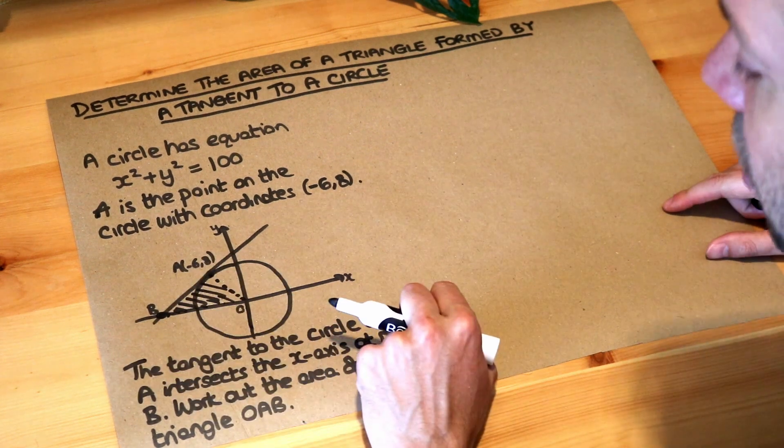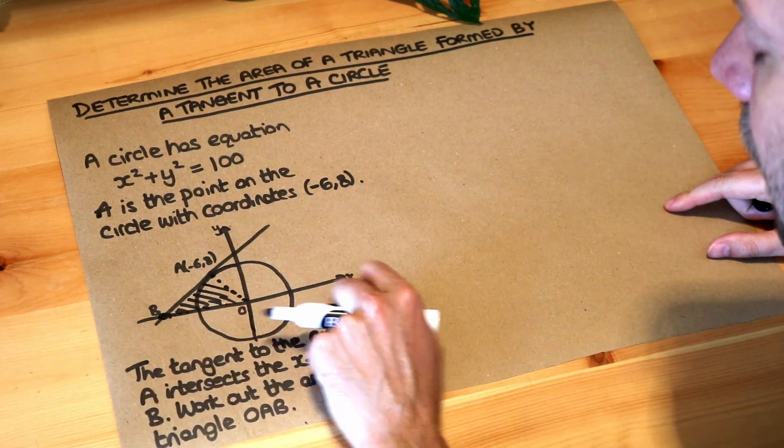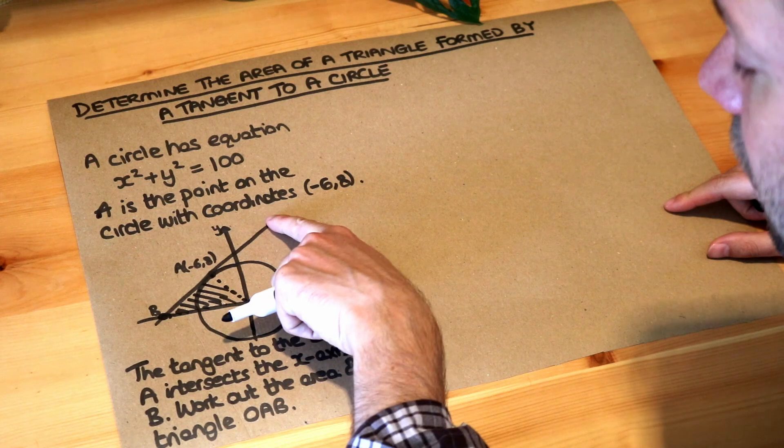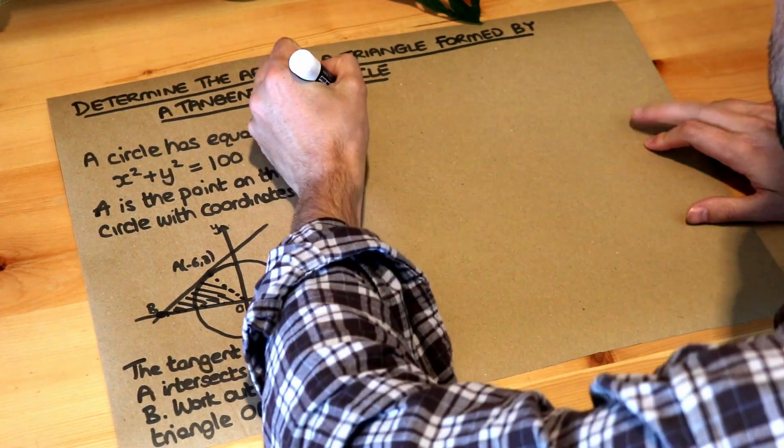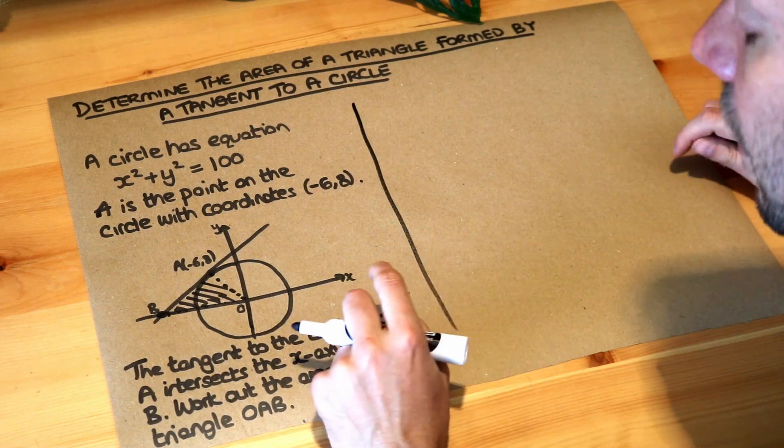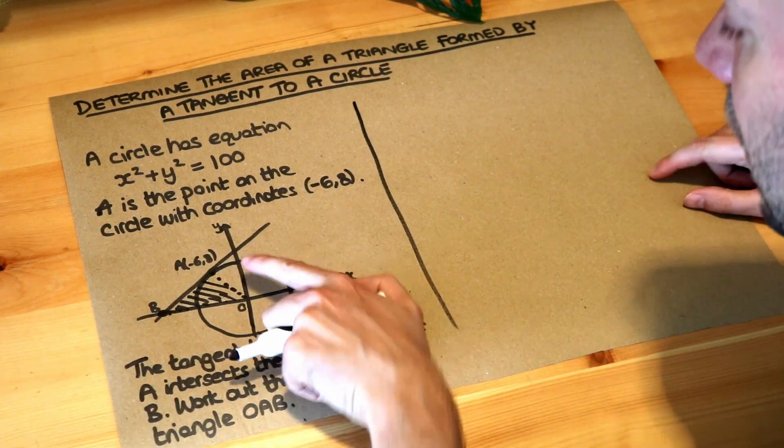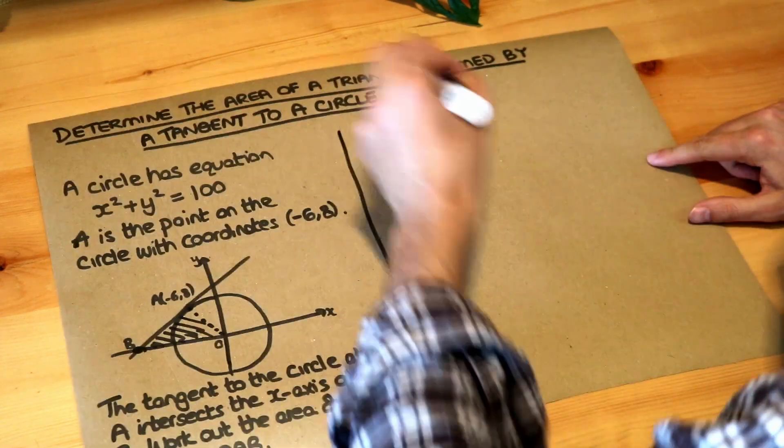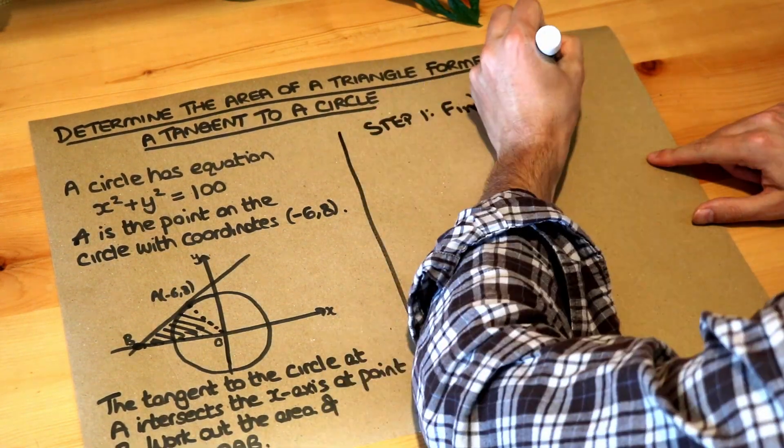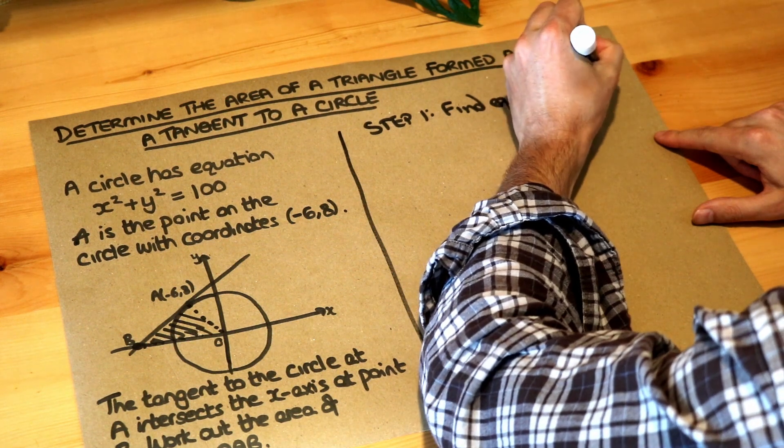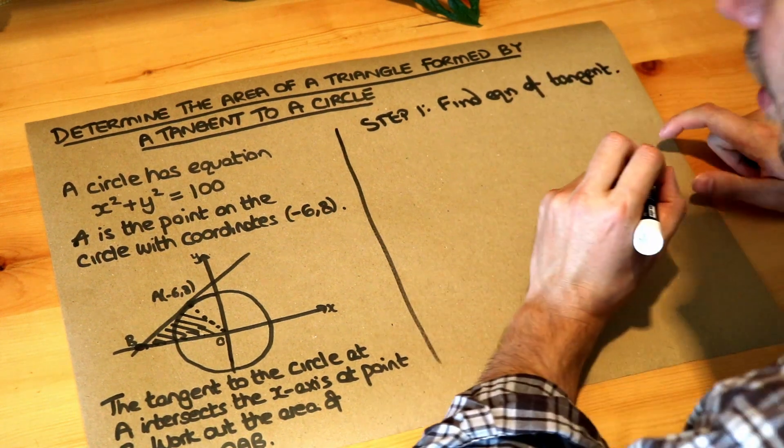Now out of these three coordinates the only one we don't know is the point B, and this is the x-intercept of this line which is a tangent to the circle. We saw how to do that in the previous video, how to find the x-intercept or y-intercept of a tangent to a circle. So step one is find the equation of the tangent, and I'll do that quickly because we've done this a number of times before in the previous videos.